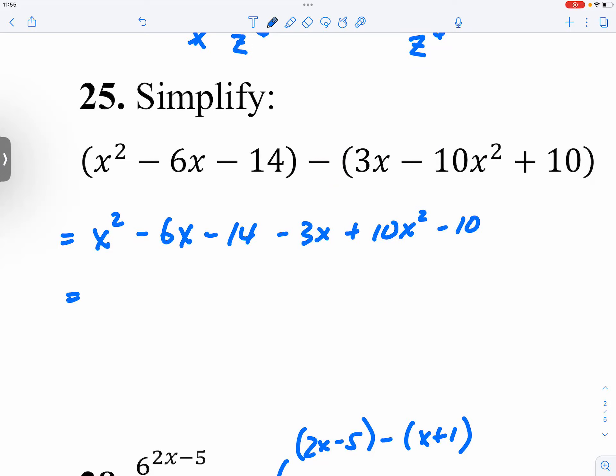So we just combine like terms. We have 11x², again just making sure all the signs are properly written down. And then we have two x terms, that would be minus 9x, and then we have minus 24.